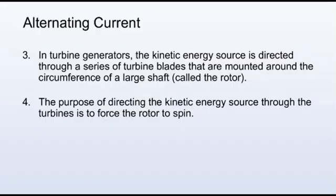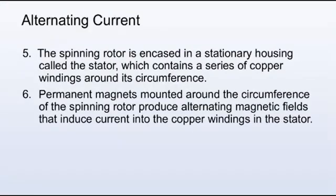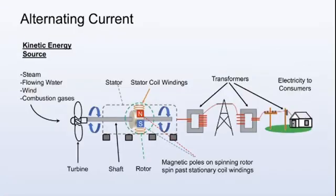In turbine generators, the kinetic energy source is directed through a series of turbine blades that are mounted around the circumference of a large shaft called the rotor. The purpose of directing the kinetic energy source through the turbines is to force the rotor to spin. The spinning rotor is encased in a stationary housing called the stator, which contains a series of copper windings around its circumference. Permanent magnets mounted around the circumference of the spinning rotor produce alternating magnetic fields that induce current into the copper windings in the stator. This figure illustrates how a turbine electric generator in a power plant functions, as described in the previous slides.